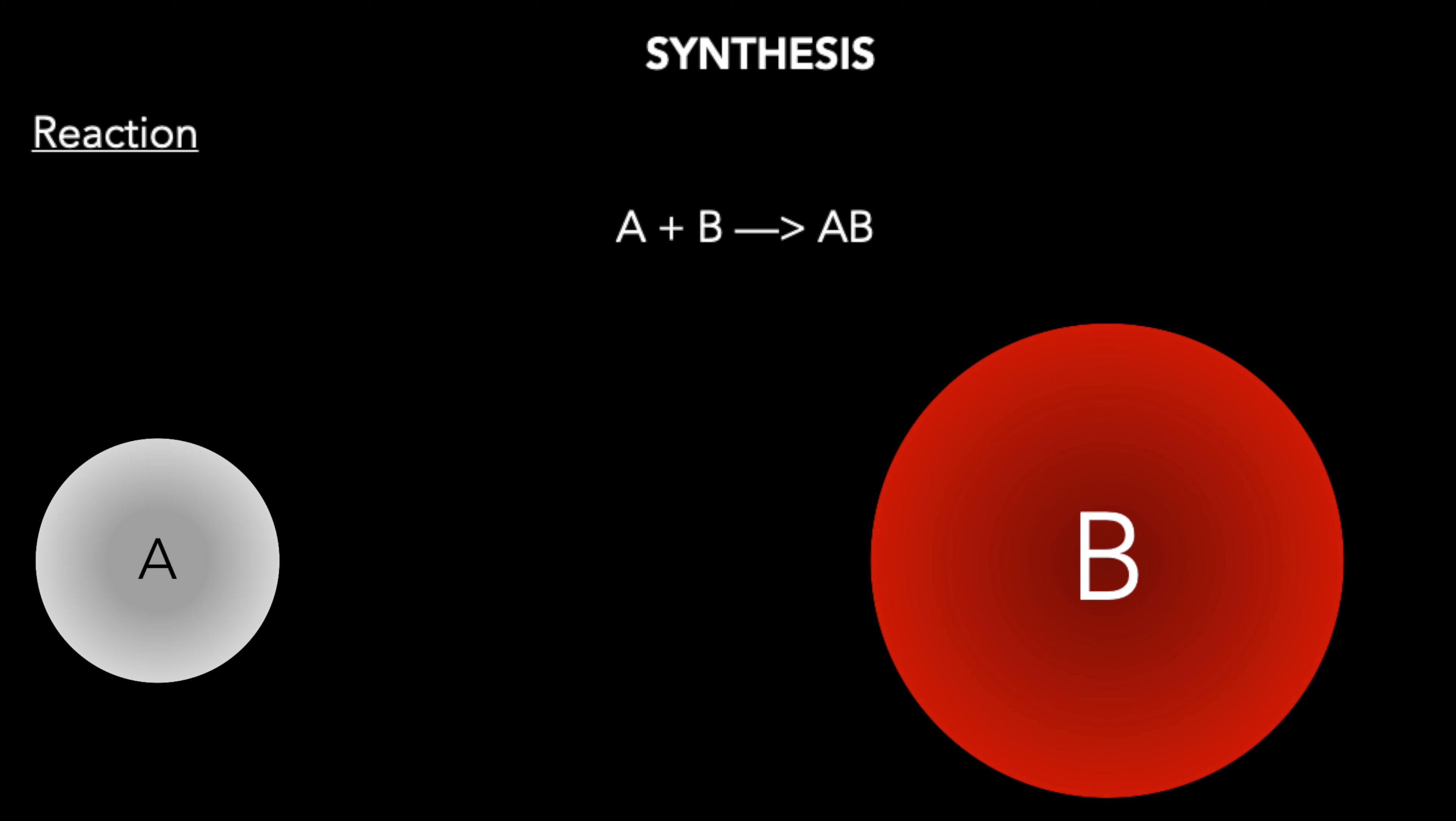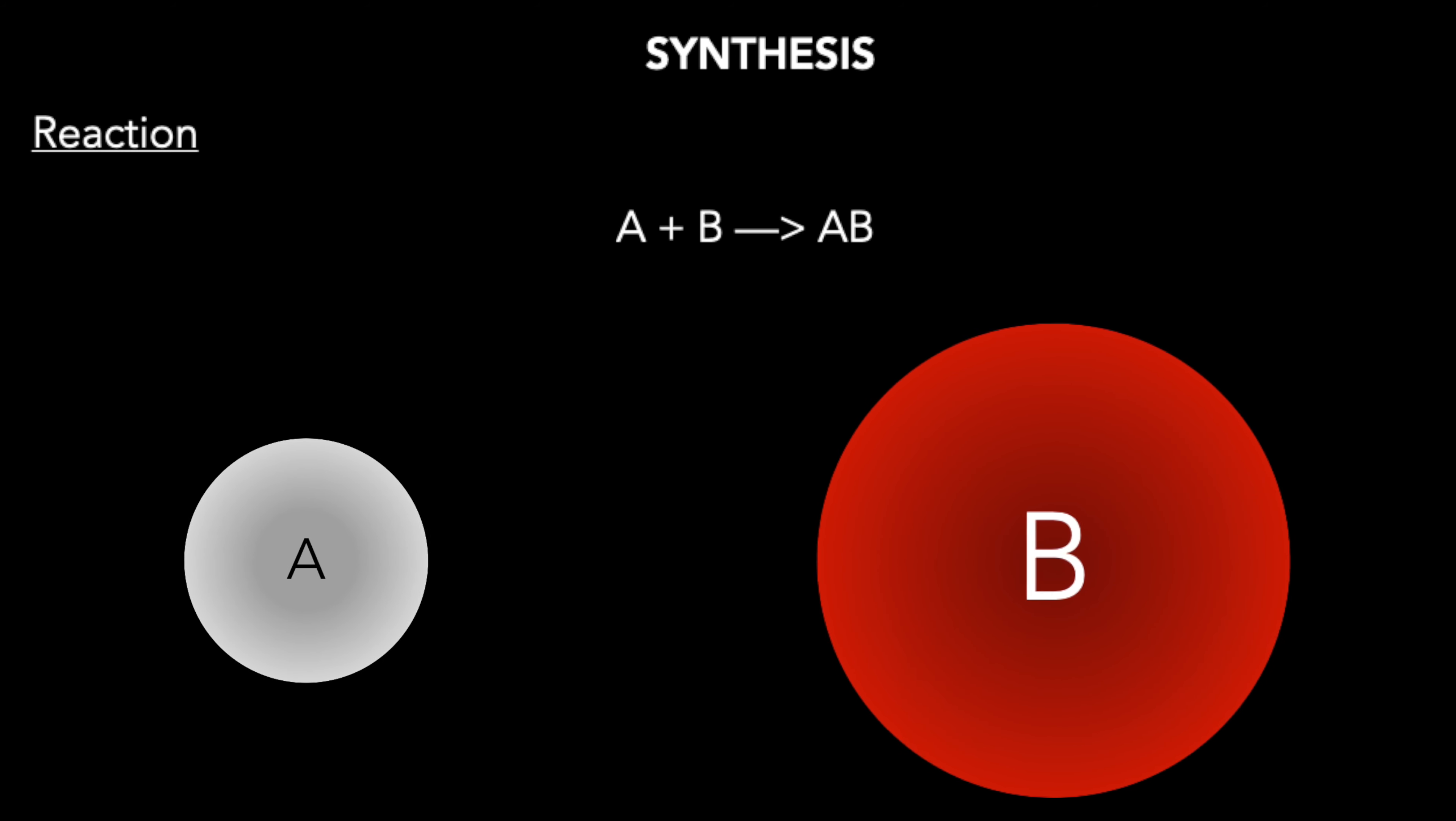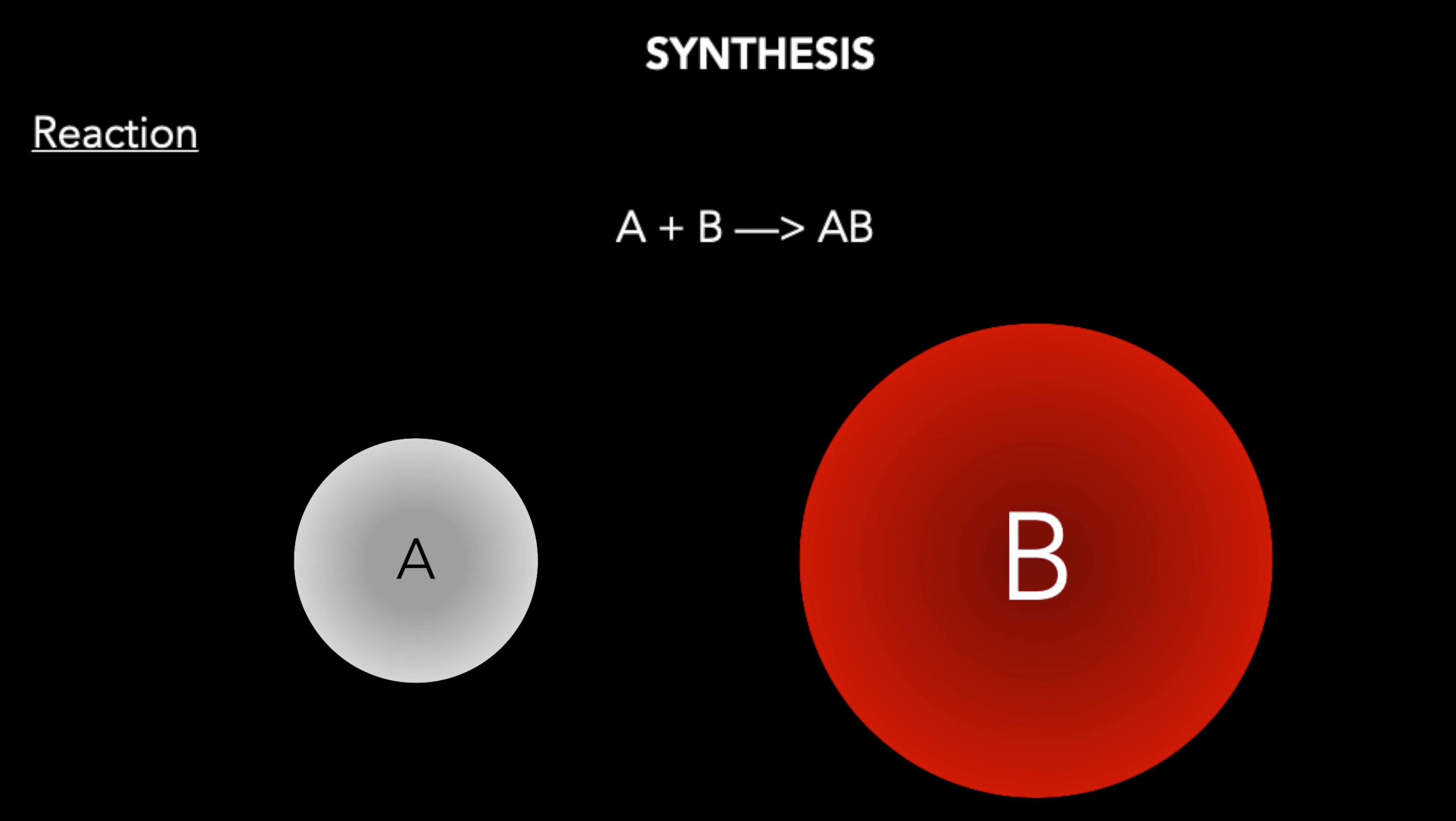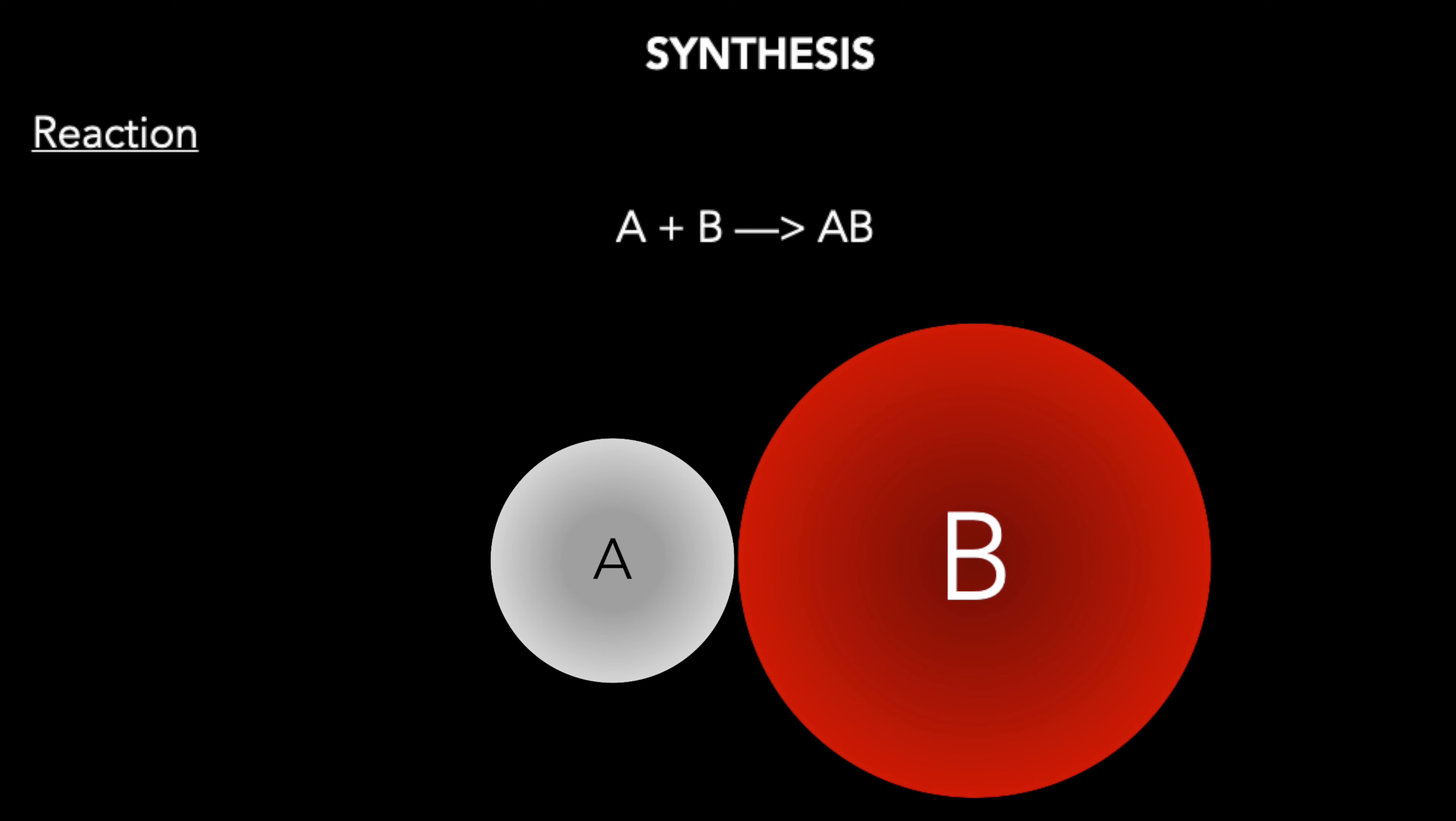You can illustrate what's happening in a synthesis reaction by watching the particle diagram below. Once the molecules or substances are given kinetic energy, they move towards each other until they collide, forming the new compound, AB.